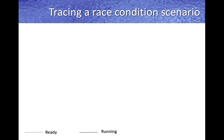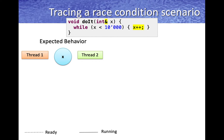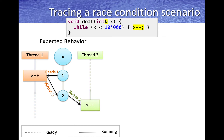Let's trace the operation of race conditions to build a strong mental model. Assume we have two threads and a shared variable x. First, let's go through a scenario where expected behavior happens. Let's say x starts with the value one and thread one starts running while thread two is not yet scheduled. Thread one reads the value one, increments x, and writes two back into memory. Then thread two starts running, reads the value two, increments it, and stores three.